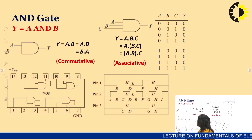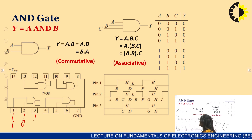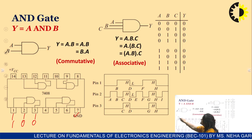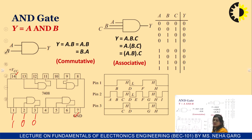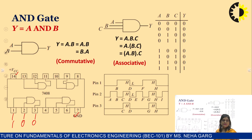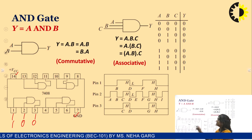If we apply 1 and 1, the output will be 1. If we apply 1 and 0, the output will be 0. Ground and VCC are also present. We must give biasing to the supply before using this IC; if we do not apply this biasing, the IC will not work.